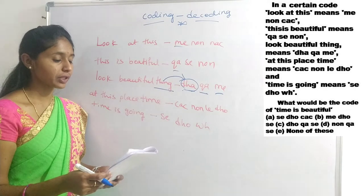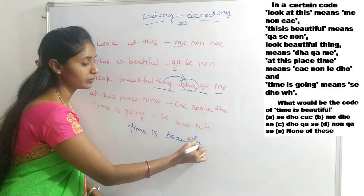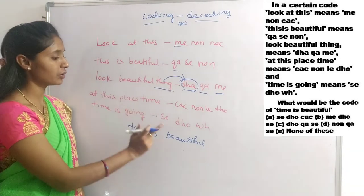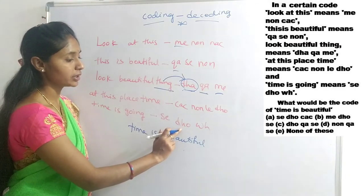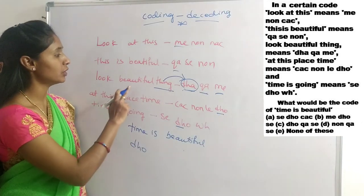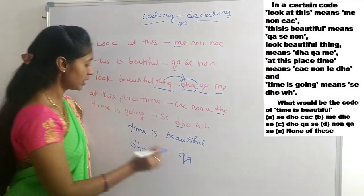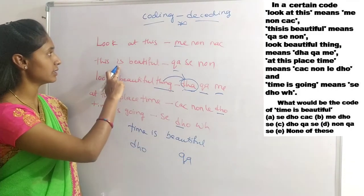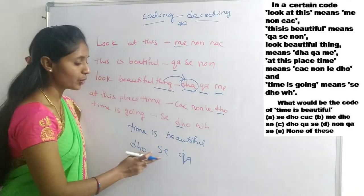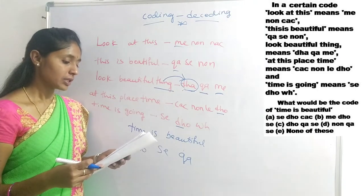Next question: What would be the code for 'time is beautiful'? Time appears in two places — the common code from those two statements is DHO, so DHO is for time. Beautiful appears in two places — the common code is QA. Is appears in two places — the common code is SE. Therefore DHO SE QA is the code for 'time is beautiful' — option C is the right answer.